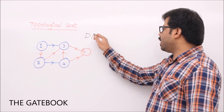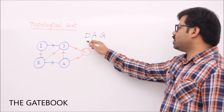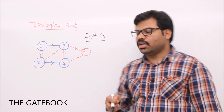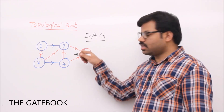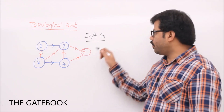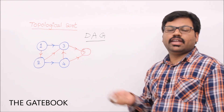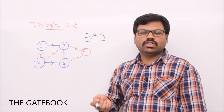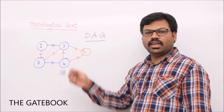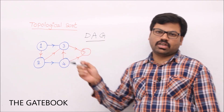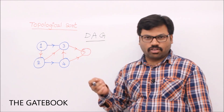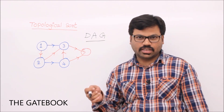A directed acyclic graph is nothing but a directed graph which does not contain a cycle. If it has a cycle, we have to detect it first — and we know how to detect a cycle in a directed graph. So first run that algorithm, and once there is no cycle, keep doing this topological sort.